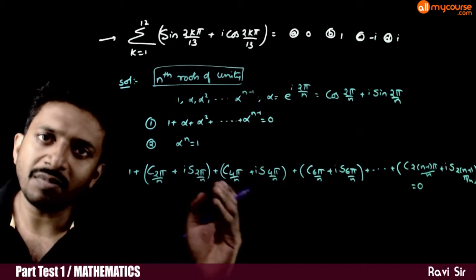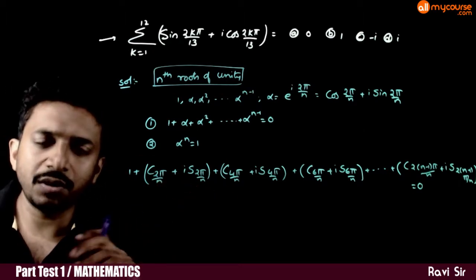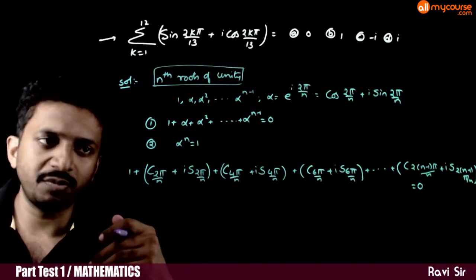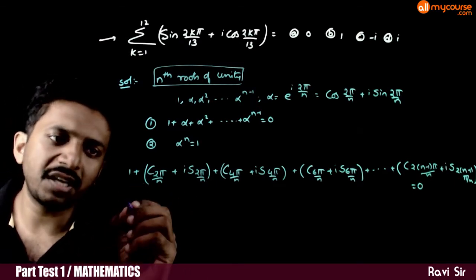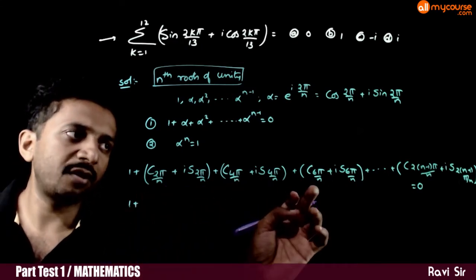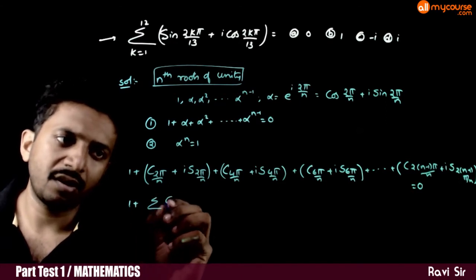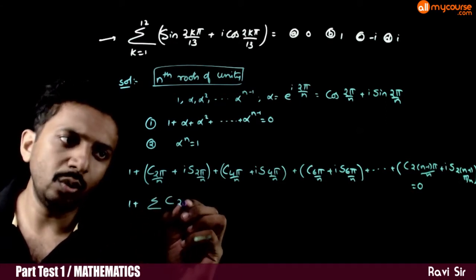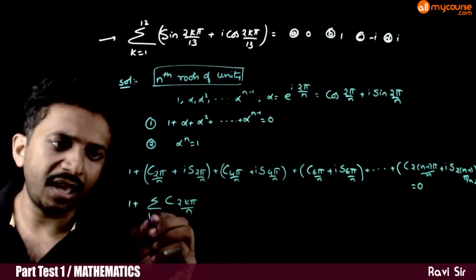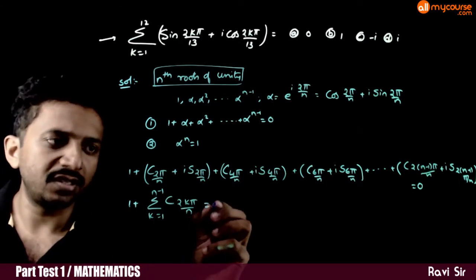This is a sum of complex numbers, and if the sum equals 0, the sum of real parts must equal 0 and the sum of imaginary parts must also equal 0. The real parts give: 1 plus cos(2π/n) plus cos(4π/n) plus cos(6π/n), and so on. This can be written as sigma of cos(2kπ/n), where k goes from 1 to n minus 1, equal to 0.